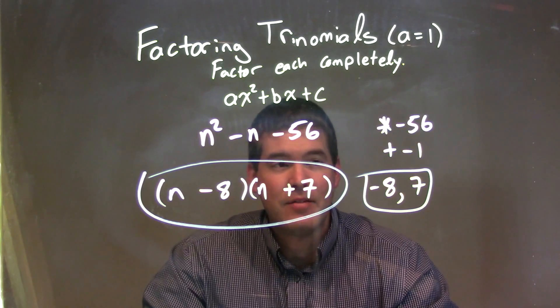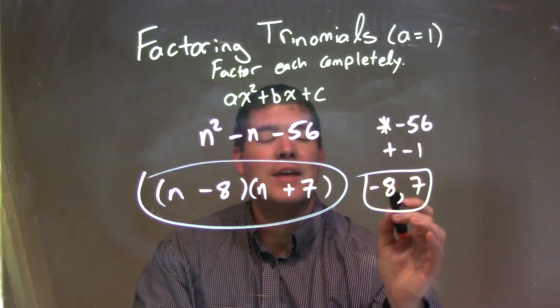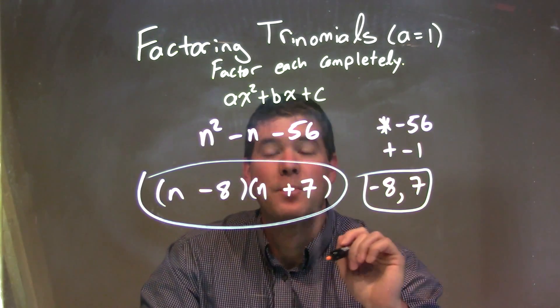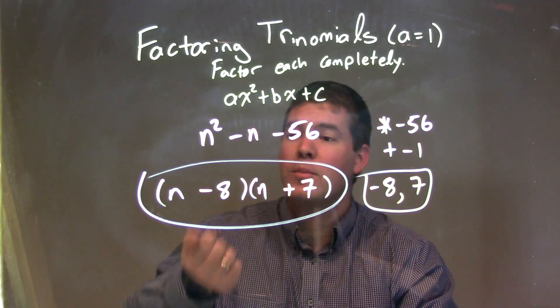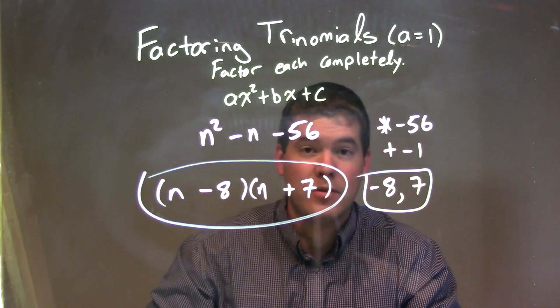56, I'm thinking 8 and 7, so a combination of those two because they're like 1 apart. And I know if I have negative 8 times positive 7, I get negative 56, but when I add the two together, I have negative 1. So then I write it out here in factored form, and our final answer is n minus 8 times n plus 7.